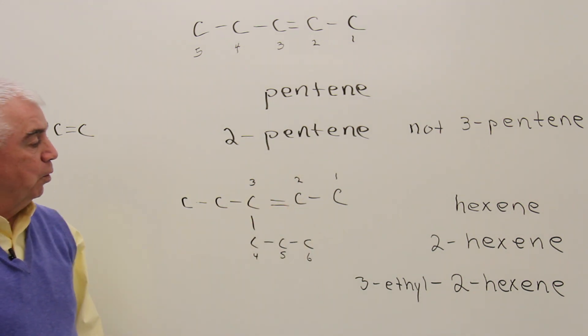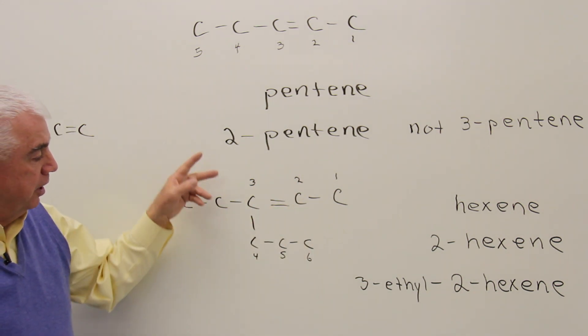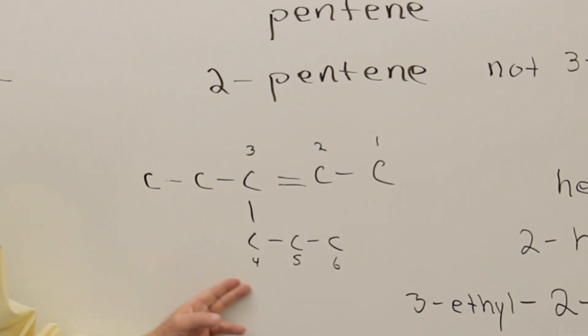Here's another example. This one has a couple of chains. We could have a chain like this, or like this, or like this. But you want to be certain to pick out a chain that, the longest chain, that contains the carbon-carbon double bond. And I've numbered it here.